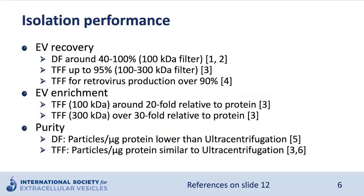How good is ultrafiltration at isolating EVs? In the literature, the numbers fluctuate, and EV recovery ranges from 40 to 100%, meaning that under certain conditions, ultrafiltration can recover all particles in a sample. EV enrichment is the ratio of EV purity before and after isolation. For TFF, for example, a 300 KDA filter enriched EVs 30-fold compared to proteins. When particles per microgram protein ratio is used to assess purity, dead-end filtration is worse than ultracentrifugation, while TFF is similar to ultracentrifugation. This indicates that dead-end filtration co-isolates a lot of protein with the vesicles, while TFF tends to isolate EVs of similar purity as ultracentrifugation.